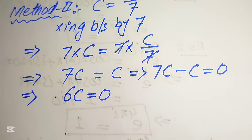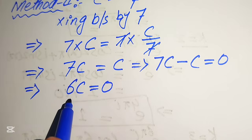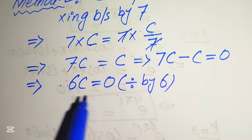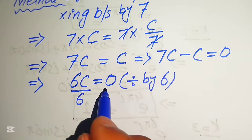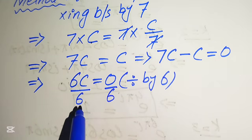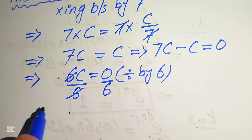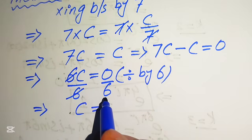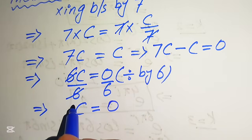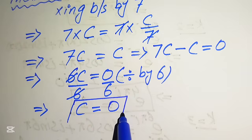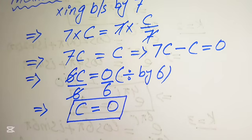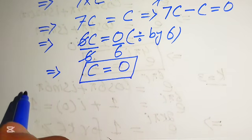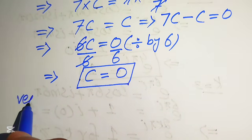Since we are solving for c, we divide both sides by six. We get six c over six equals zero over six. The sixes cancel on the left, giving c equals zero over six, and zero over six equals zero. This is the final answer, and you can see that both methods give the same value of c.